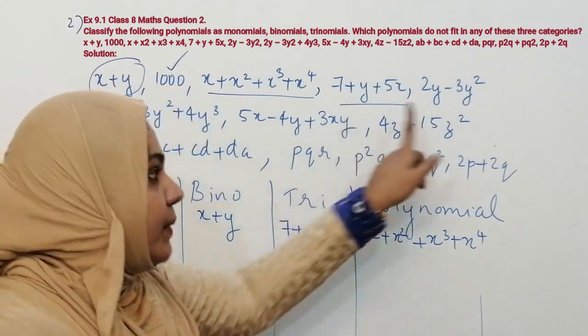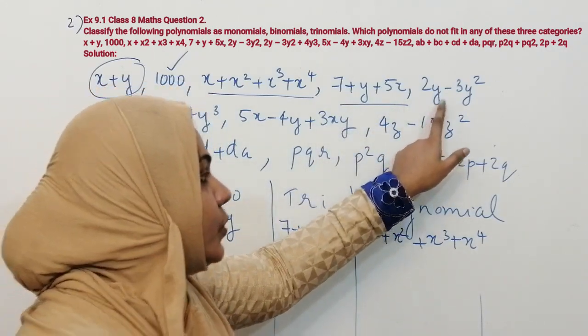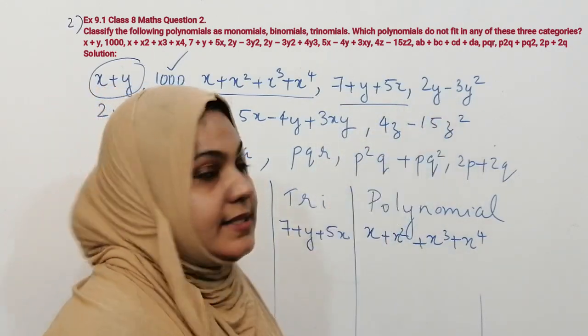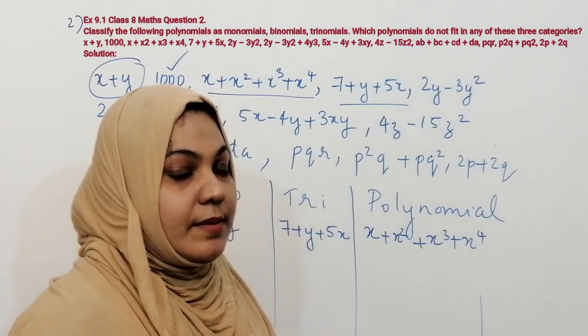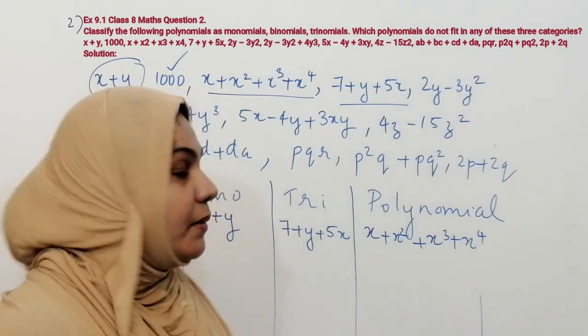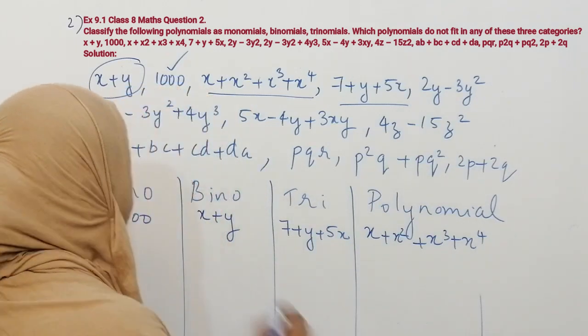The next algebraic expression is 2y minus 3y squared. It has two terms, so it is under binomial.